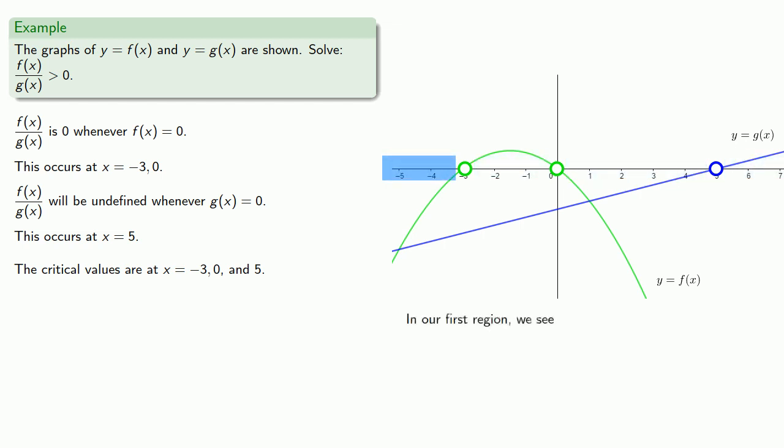In this first region, we see that f of x, our graph of y equals f of x is below the x-axis. So f of x is less than zero. We also see that the graph of y equals g of x is below the x-axis. And so g of x is also less than zero.